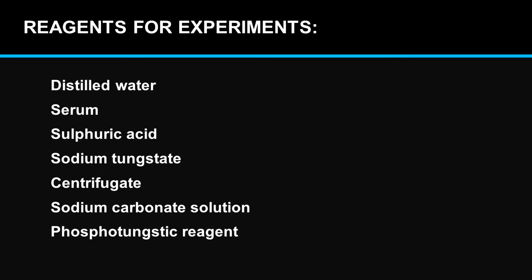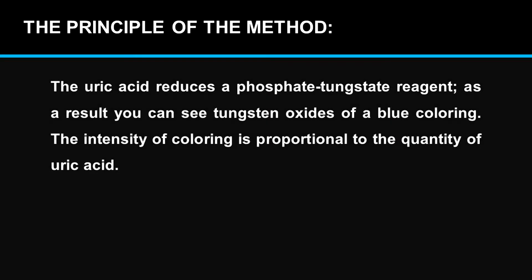Reagents for the experiment: distilled water, serum, sulfuric acid, sodium tungstate, centrifugate, sodium carbonate solution, and phosphotungstate reagent. Uric acid reduces the phosphotungstate reagent. As a result, you can see tungsten oxides producing a blue coloring. The intensity of the coloring is proportional to the quantity of uric acid.